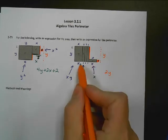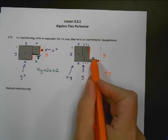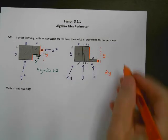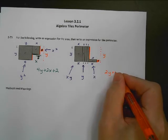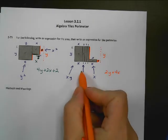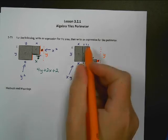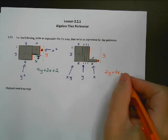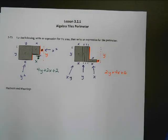How many x's do I have? I've got 1, 2, 3, 4 x's. How many 1's do I have on the perimeter? 1, 2, 3, 4, 5, 6. So plus 6. There's my perimeter. All right.